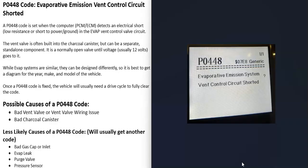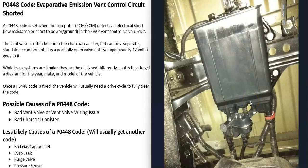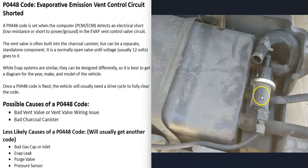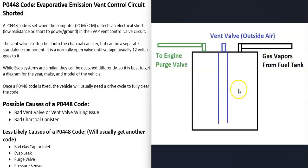The most common things that cause a P0448 code are a bad vent valve or the wiring going to the vent valve. The vent valve can be built into the charcoal canister, or they can be located inside of what's called a leak detection pump - these leak detection pumps usually contain the vent valve and the pressure sensor. The vent valve can also be separate on some vehicles but will be located right around that charcoal canister somewhere. The separate ones are the easiest to work on, and the exact location of the vent valve really varies.